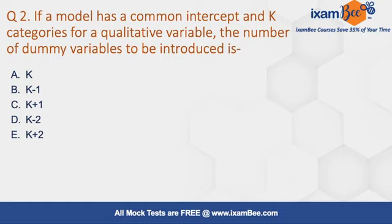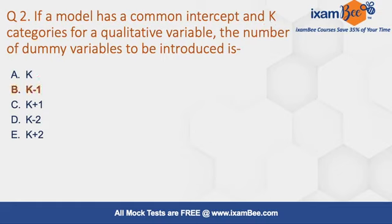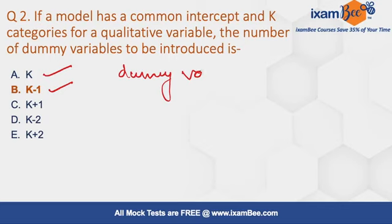Moving to question number two: if a model has a common intercept and k categories of a qualitative variable, the number of dummies to be introduced is k minus 1. We should not introduce k dummies but k minus 1. The reason is that if you introduce k dummies, there will be a case of perfect collinearity between the dummies, and this problem is known as the dummy variable trap.